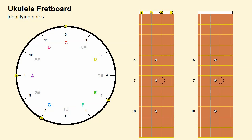For example, suppose we want to identify the note corresponding to the seventh fret of the second string of the ukulele. To do this, we draw a seven-hour arc starting at hour 4, corresponding to the open second string, which concludes on the note B — this is the note sought.